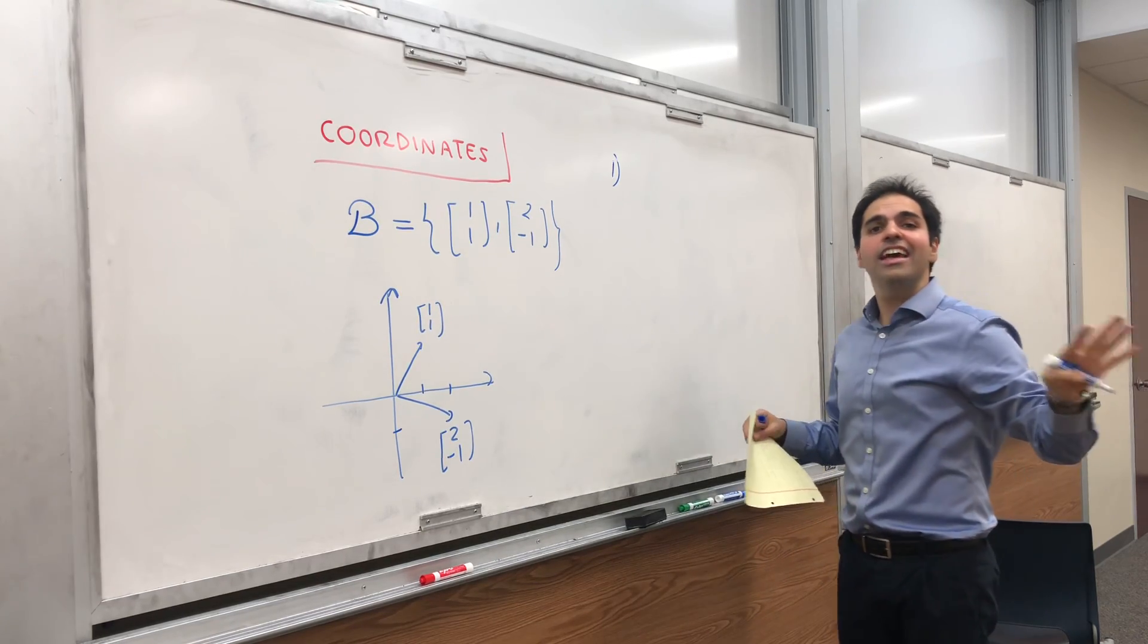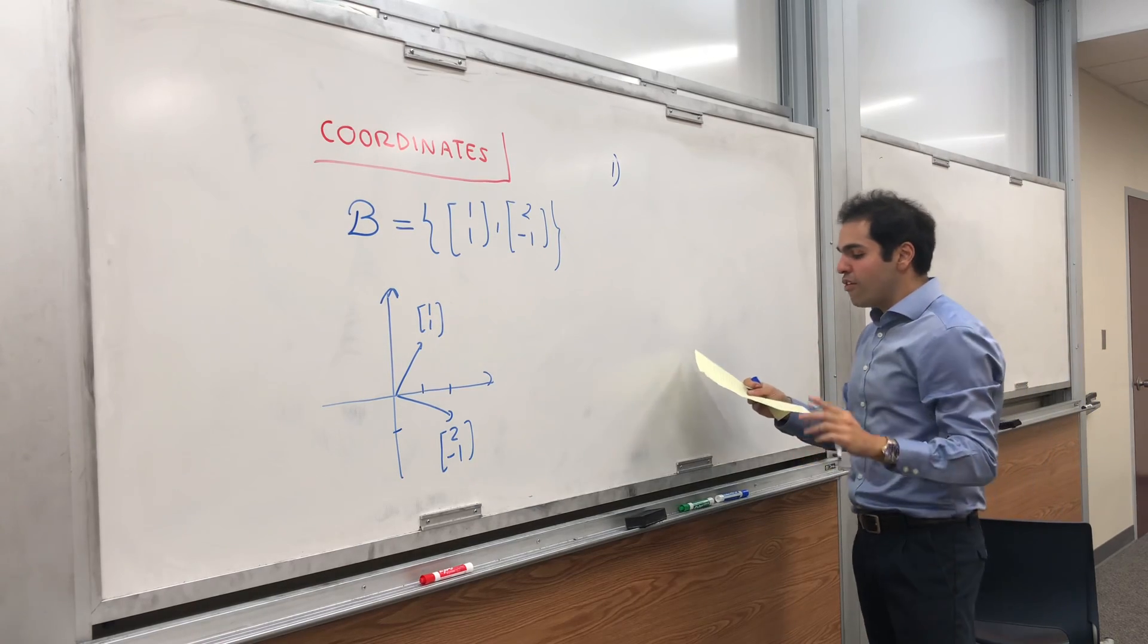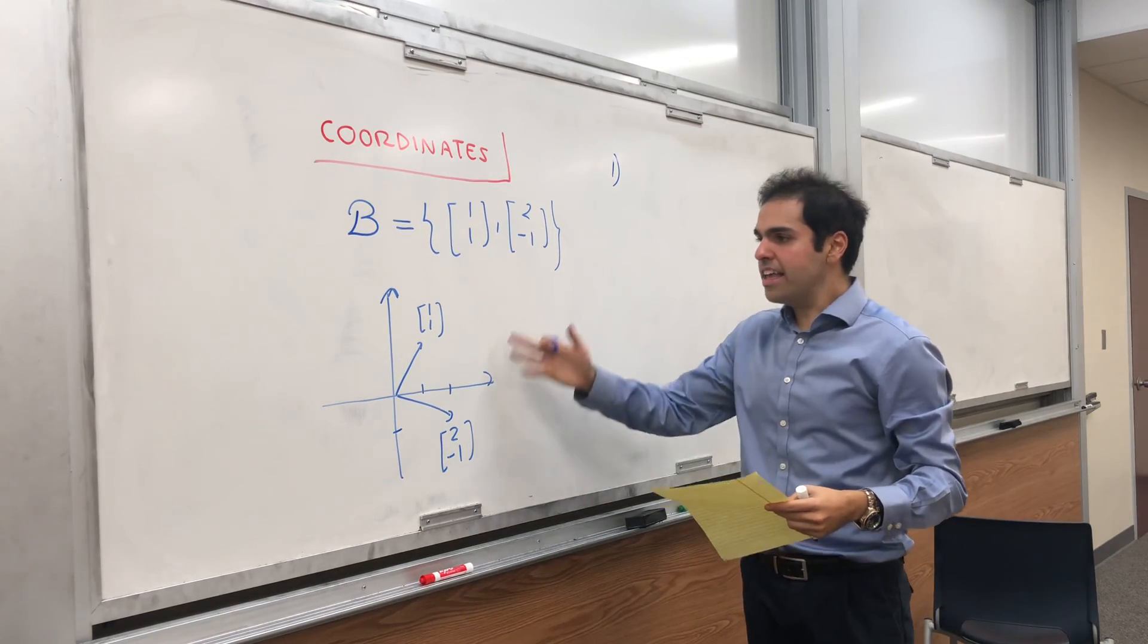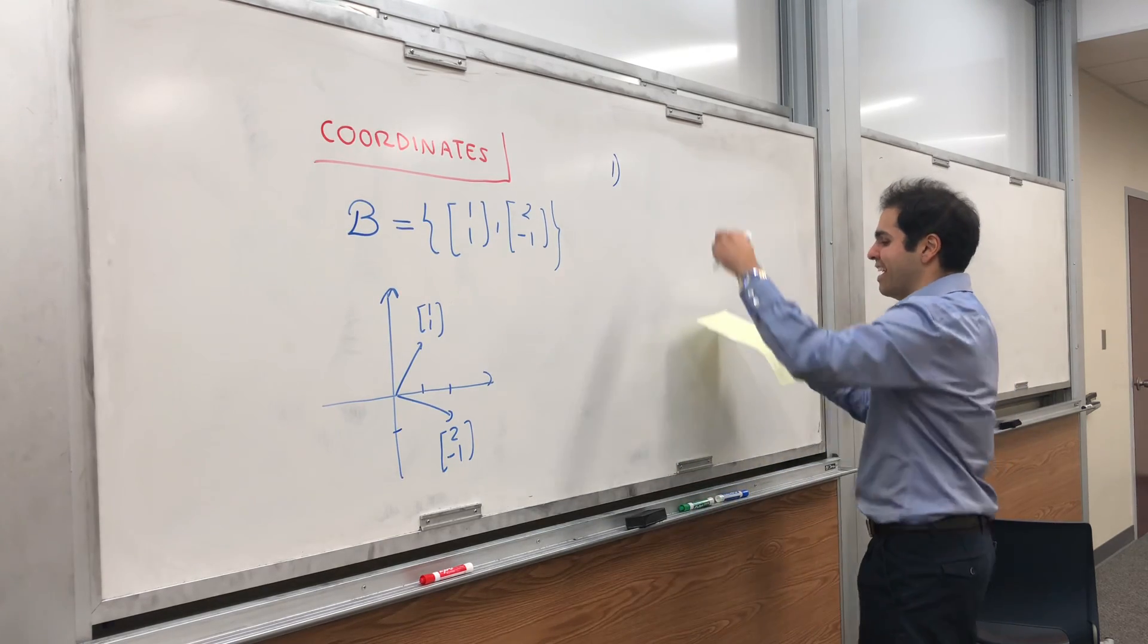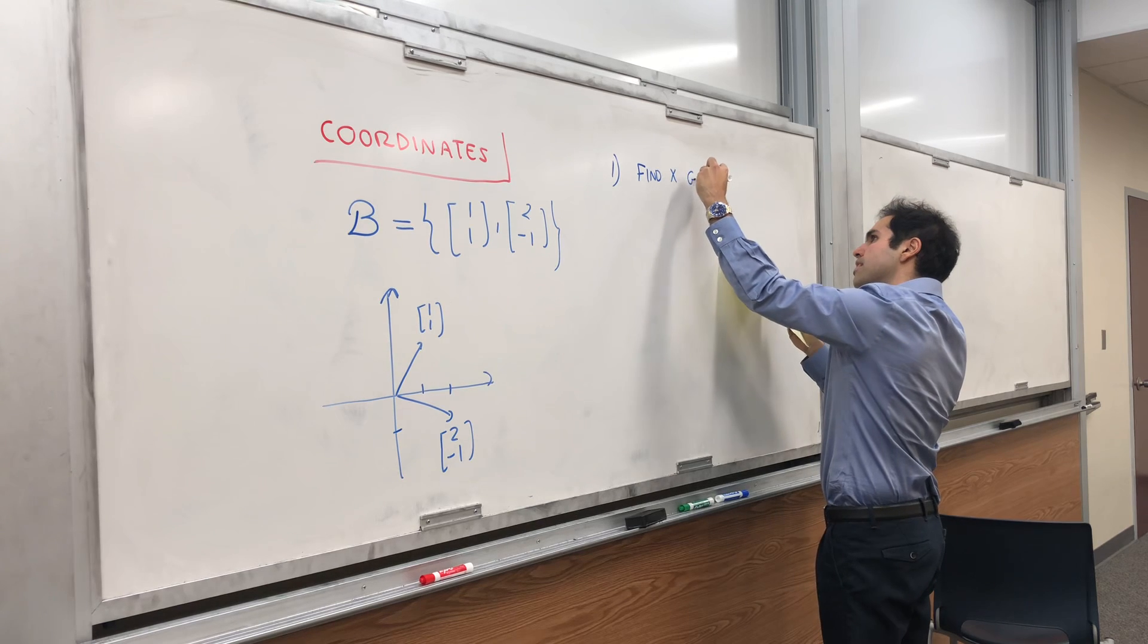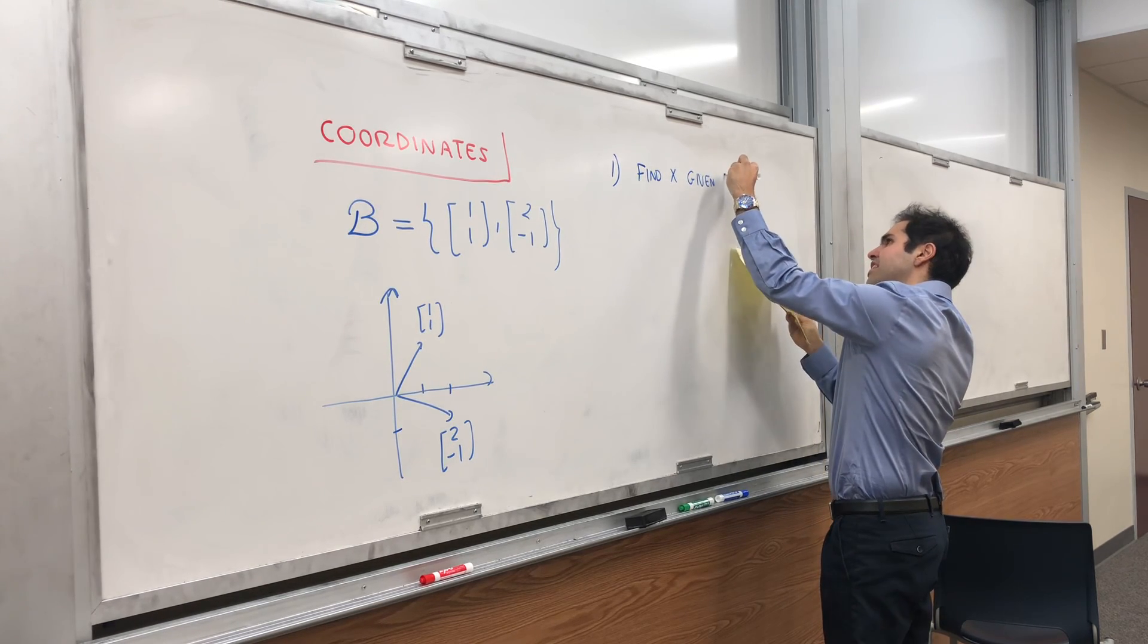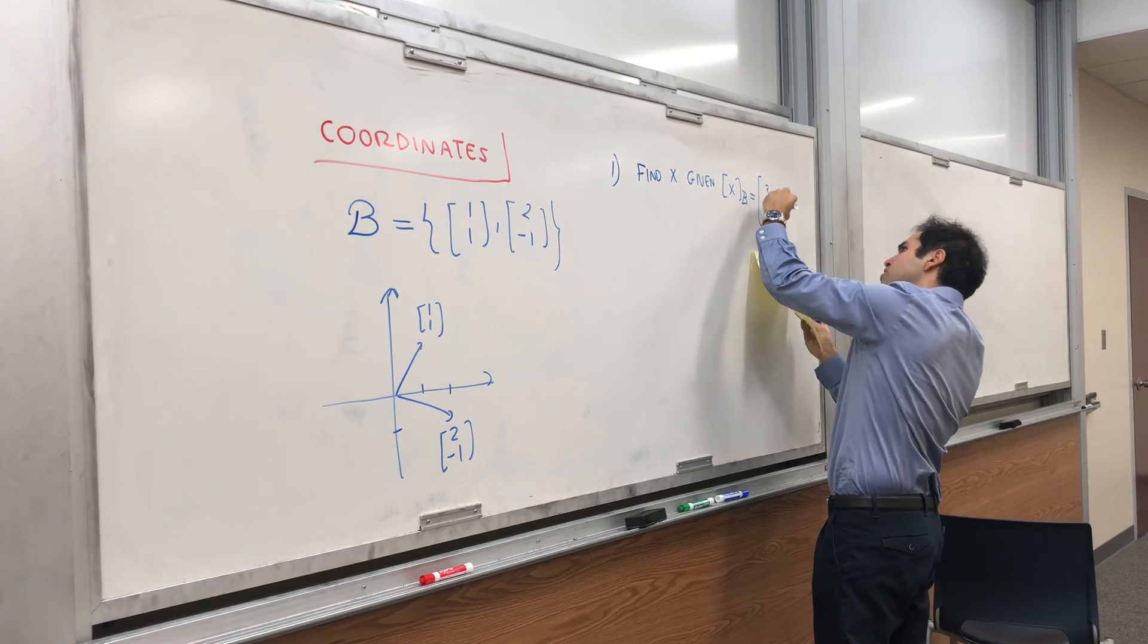So let's do two questions with this. And by the way, at the end, I'll explain why bases are so important for that. First of all, suppose I give you the coordinates of a certain point x. Let's find that point x. So find x given that the coordinates of x with respect to B are (3,2).